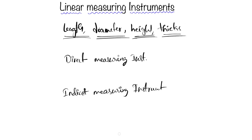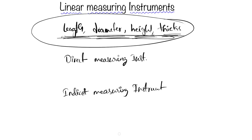Direct measuring instruments are those where any of these parameters can be determined directly. If these parameters cannot be determined directly, we have to calculate some external parameter, and from that parameter we derive the required values — those are called indirect measuring instruments. For example, if we use any optical instruments to measure the length of something, that comes under indirect measuring instruments.